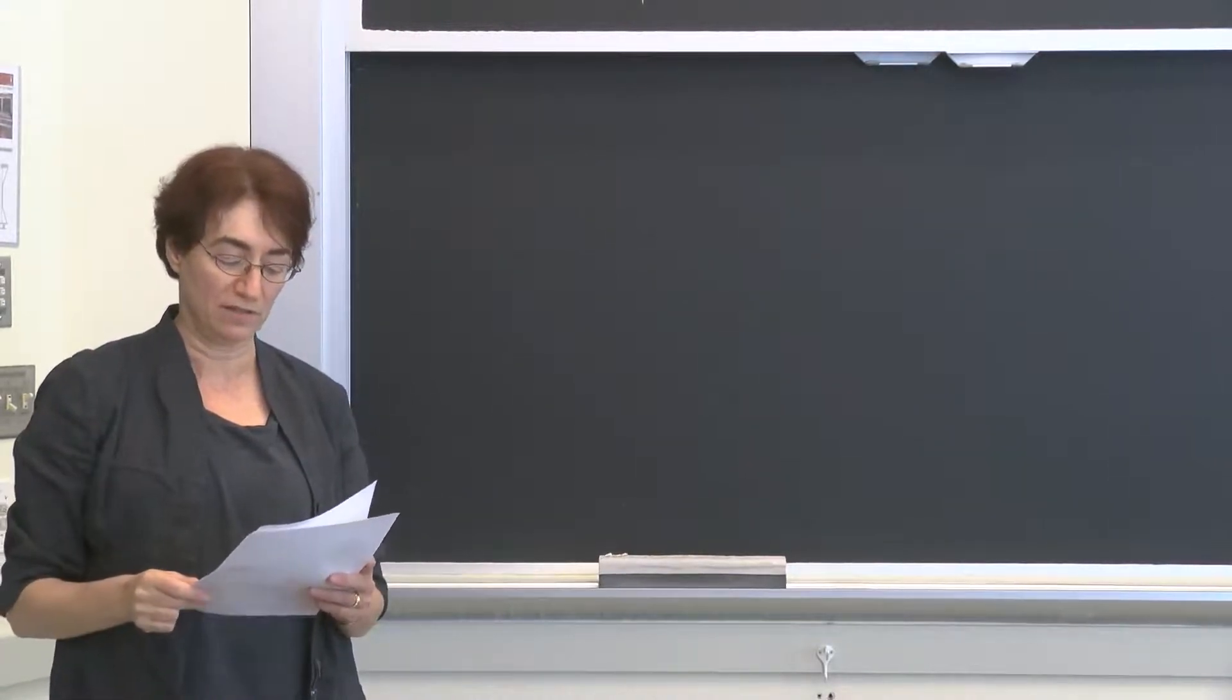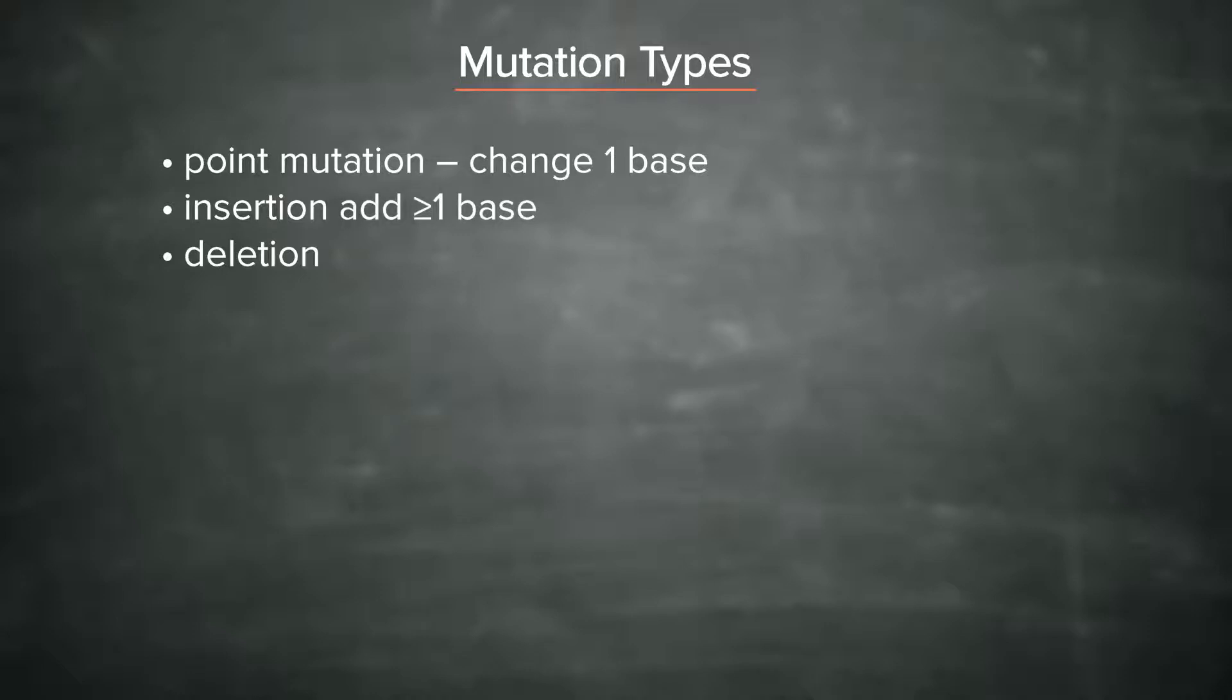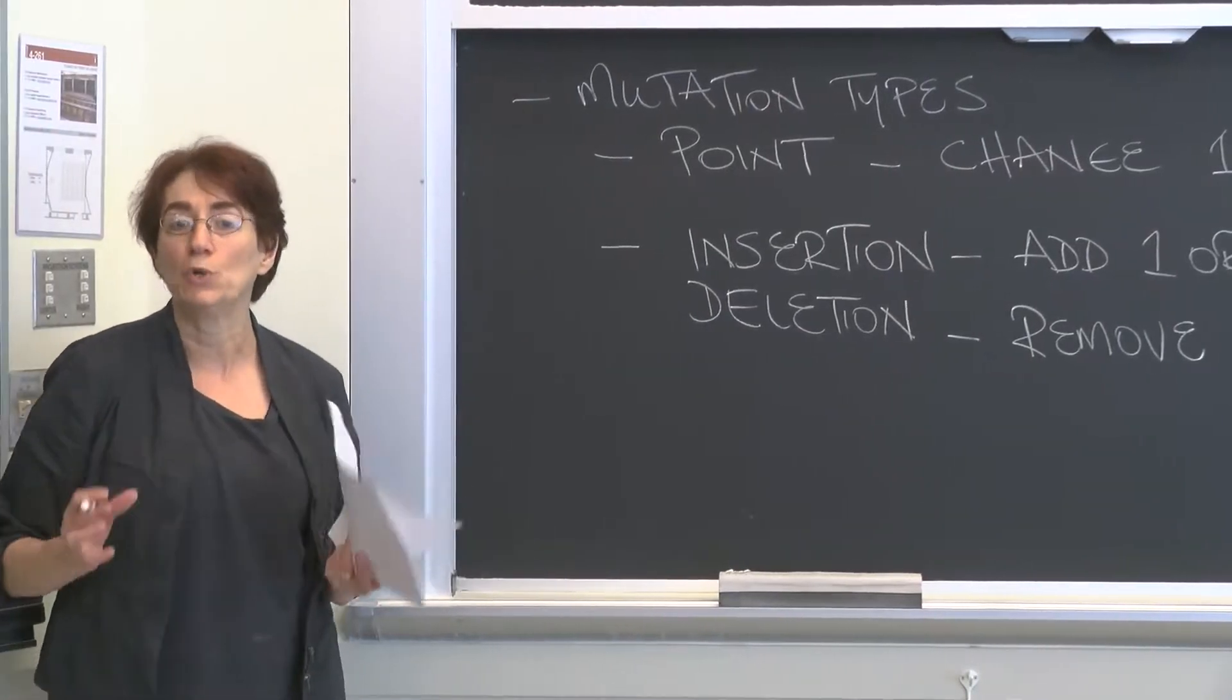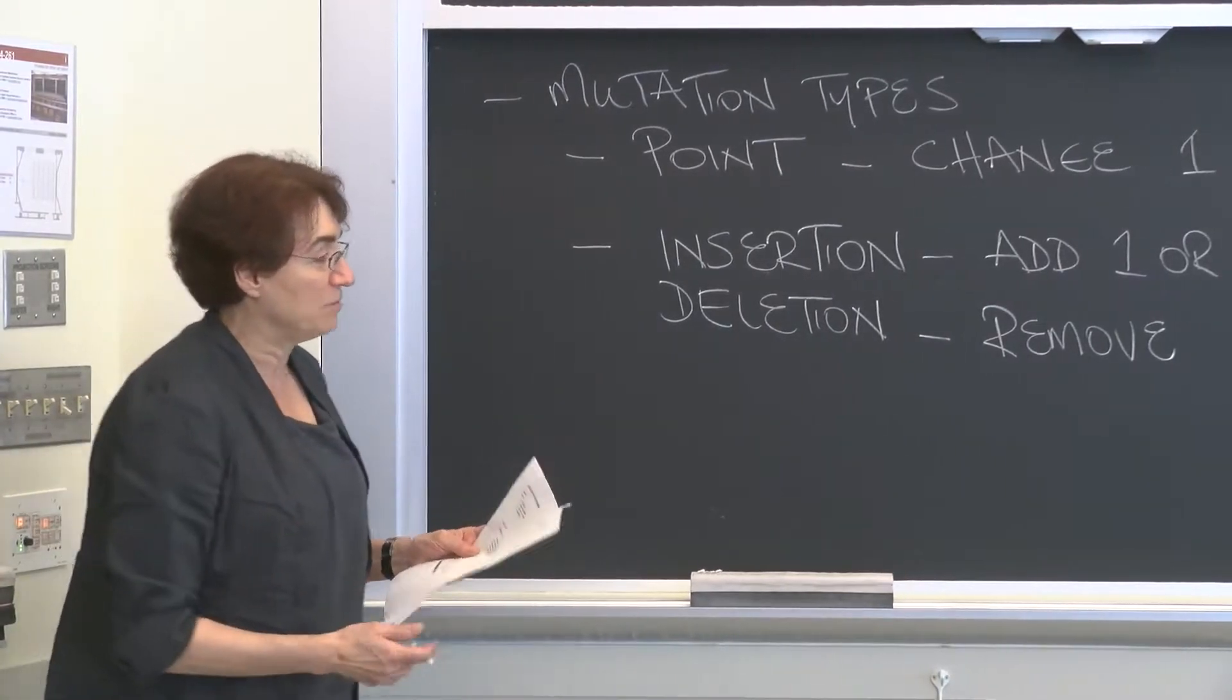There are really two classes that I want you to know about, two types of mutation. The first are point mutations. These change one base at a time. They change one base and substitute another base at the same position in the DNA sequence. The second type are the insertions and deletions. Insertions add one or more bases, and deletions remove one or more bases. There's also a whole other class of mutations that affect something other than the actual protein coding sequence, and we'll talk about those very briefly in a moment.